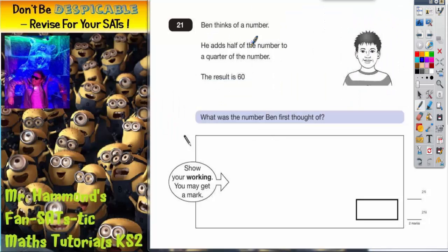Question 21. Ben thinks of a number. He adds half of the number to a quarter of the number and the result is 60. What was the number Ben first thought of?